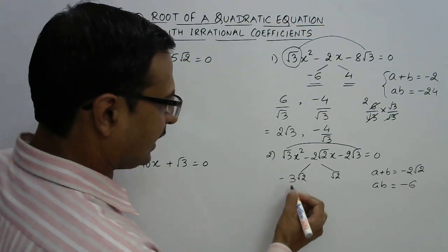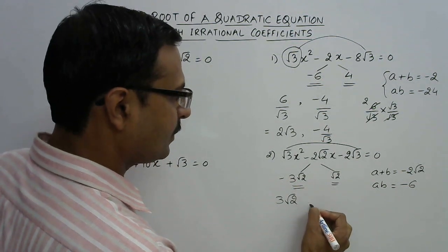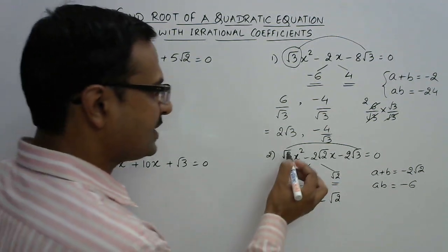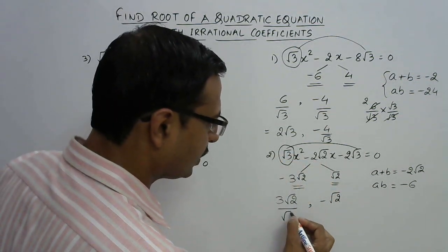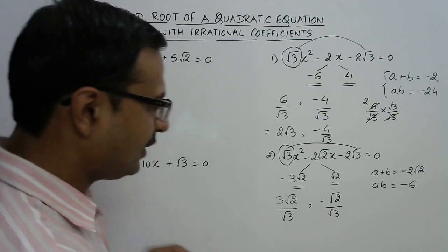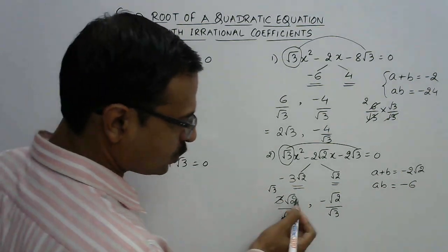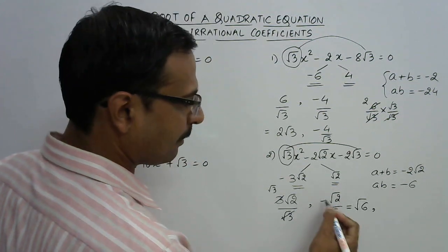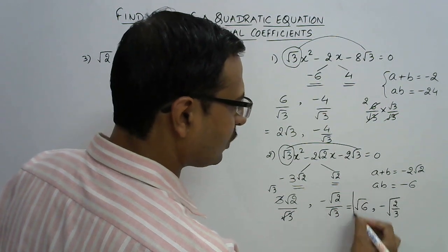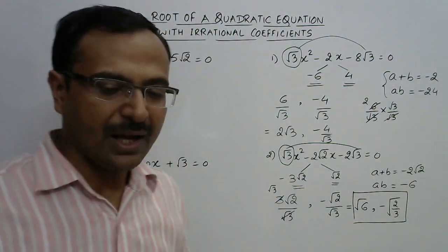Now change the sign: minus 3√2 becomes plus 3√2, and √2 becomes minus √2. The final step is to divide both numbers by the coefficient of x². The 3 cancels with the √3 coefficient giving √3, and √3 × √2 = √6 as the first answer. For the second answer, combining the square root signs in numerator and denominator gives minus √(2/3). So the answers for the second question are √6 and minus √(2/3).